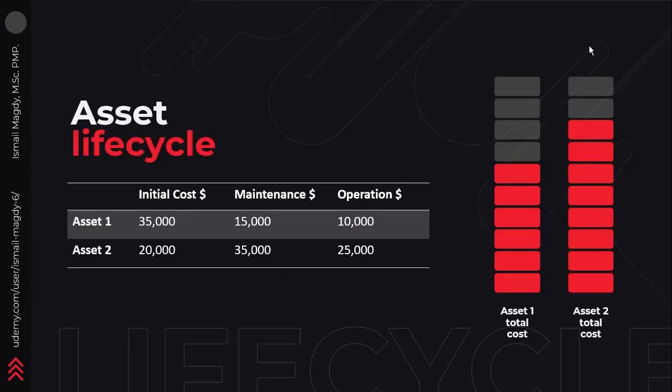Here we can see an example of a cost report for two different assets over the end of their lifecycle. Asset number one had an initial cost of $35,000, a maintenance cost of $15,000, and an operation cost of $10,000, giving a total cost of $60,000. Asset number two had an initial cost of $20,000, a maintenance cost of $35,000, and an operation cost of $25,000, giving a total cost of $80,000. Even though asset number one had a higher initial CAPEX cost, its overall lifecycle cost was lower — showing the importance of investing in proper engineering and defining the required specifications during the CAPEX stage.